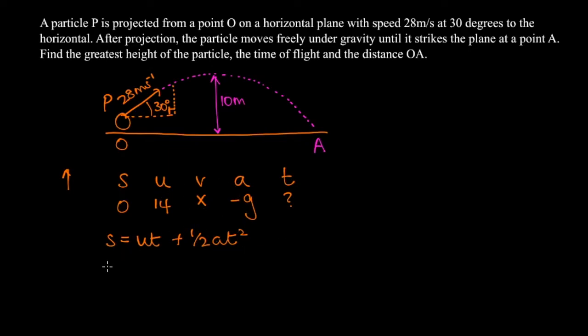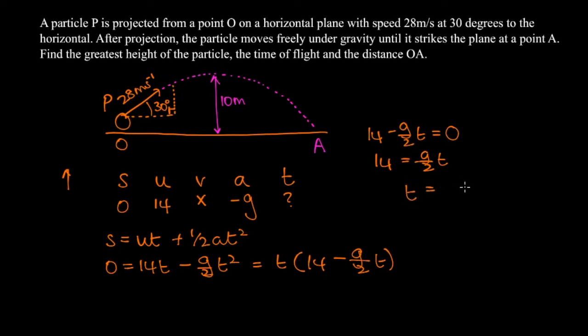Now plugging in the values, 0 equals 14t minus g over 2t squared. If we factorize out the t from this equation, we get t times 14 minus g over 2t. The solution when t equals 0 describes when the particle P is at the origin, whereas the solution to 14 minus g over 2t equals 0 describes when the particle is at A. So we're going to solve this for t. 14 equals g over 2t. Therefore t equals 28 over g. And if we take g to be 9.8, then this comes out as approximately 2.9 seconds to 2 sig fig.